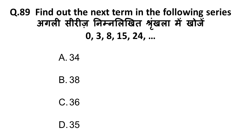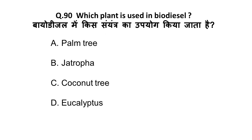Next question: find the next term in the series — 0, 3, 8, 15, 24. Taking the differences between adjacent numbers: 3 − 0 = 3, 8 − 3 = 5, 15 − 8 = 7, 24 − 15 = 9. The differences are increasing by 2 each time. The next difference should be 11. So 24 + 11 = 35. The correct answer is 35.